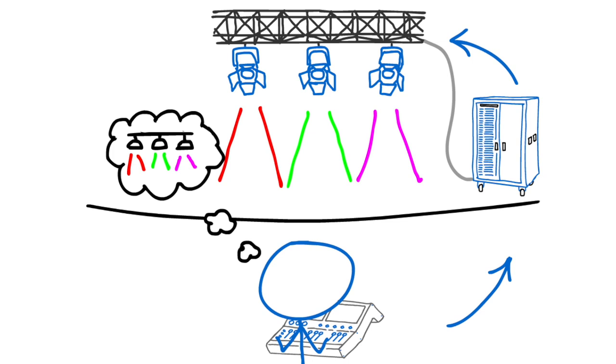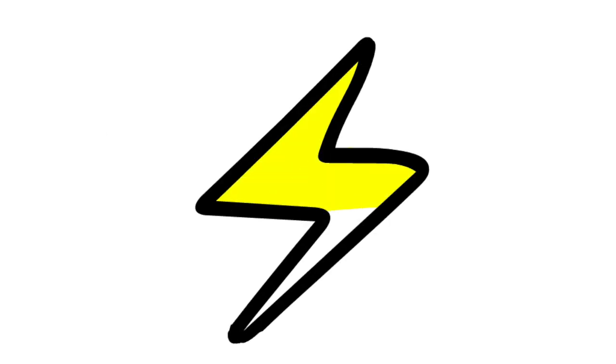The dimmer needs one thing and that is power. Sometimes a lot of power. Quite often it's a hundred amp three-phase and sometimes it's a 400 amp three-phase.